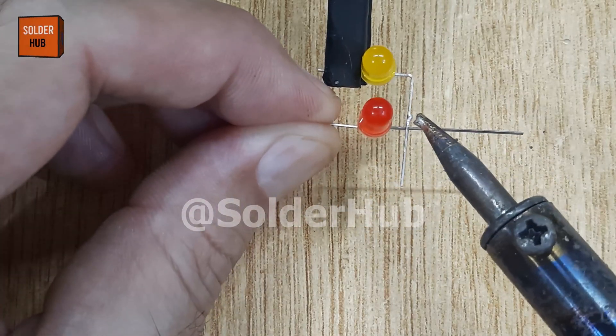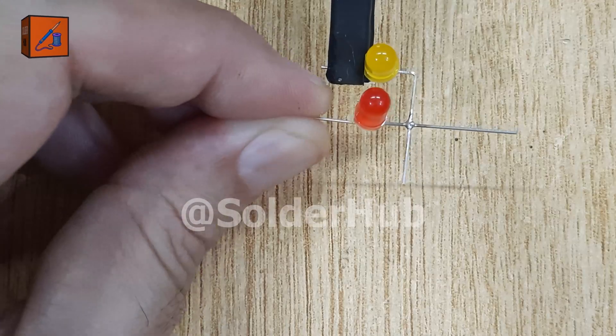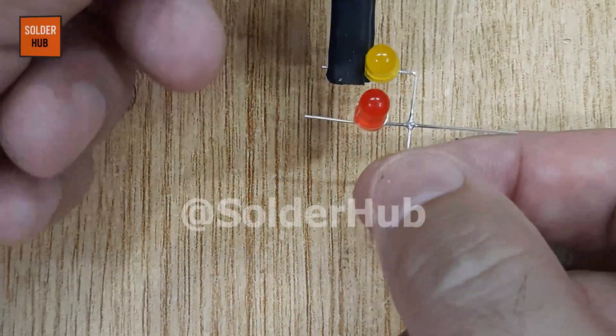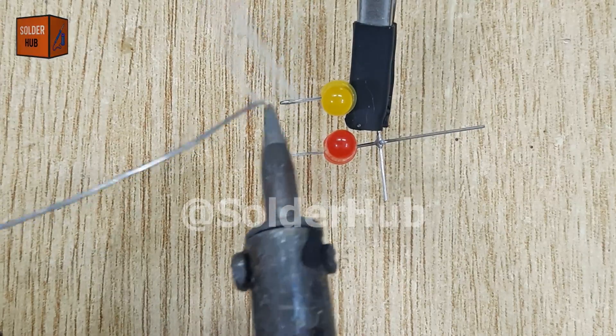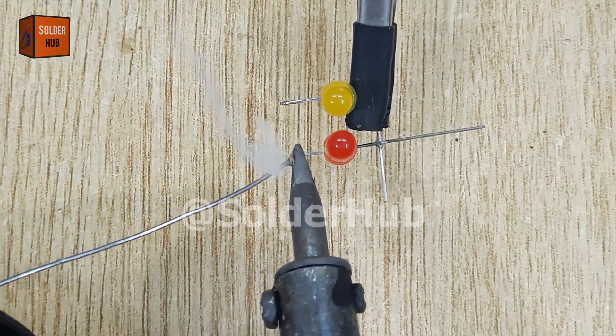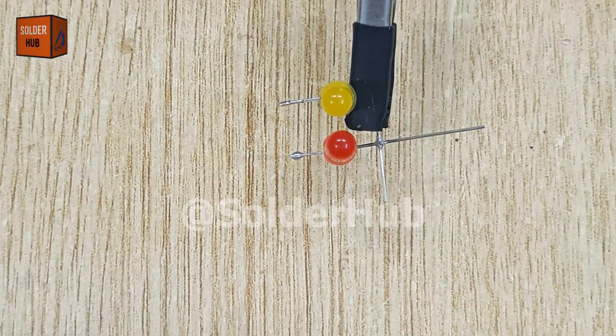I solder the positive pin, anode, of the red LED directly to the positive pin of the yellow LED. This way both LEDs share the same supply voltage. After that I carefully apply solder to the negative pins, cathodes, of both LEDs. This prepares the pins for the next connections, ensuring that the joints are strong and won't break easily.